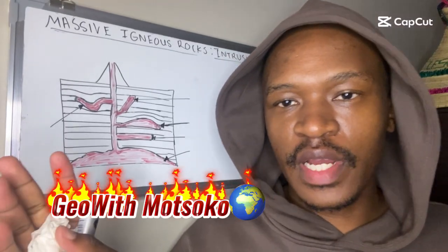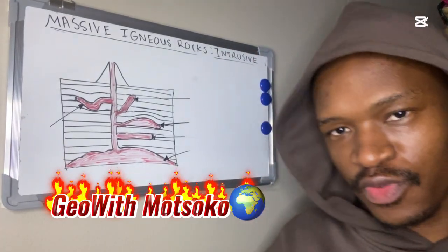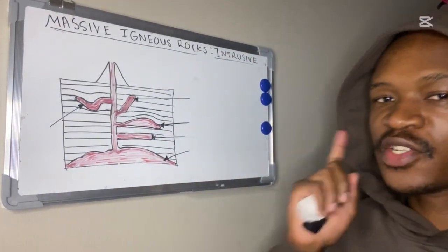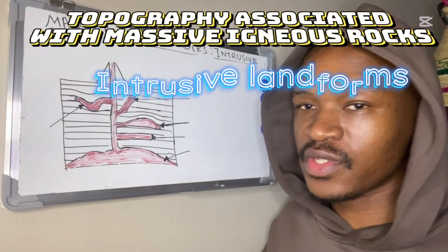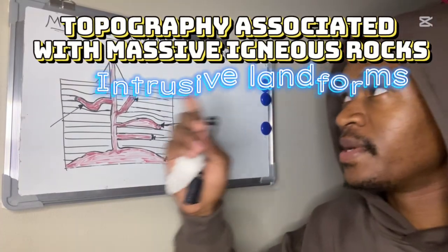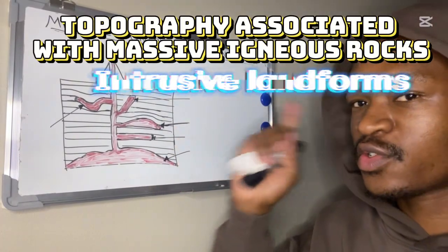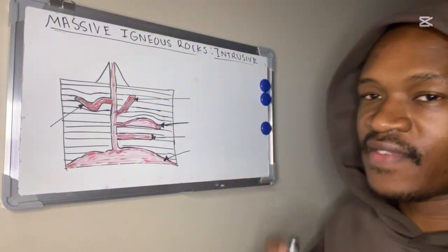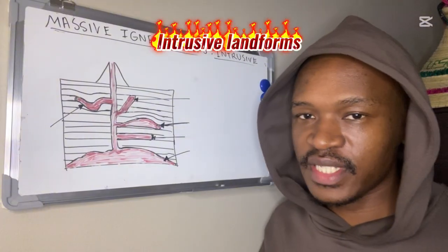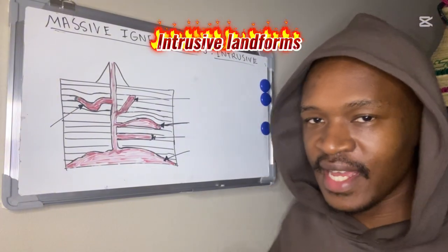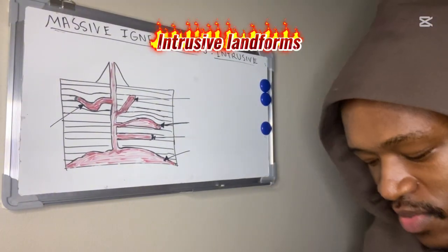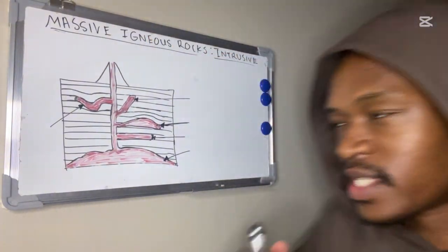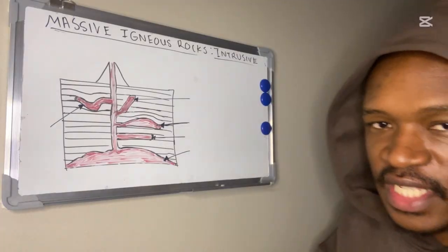Hey guys, welcome to Geo Muzoku. In today's video we are covering the topic of topography associated with massive igneous rocks. Today we are looking at intrusive landforms. The word intrusive means that these landforms are below the surface.